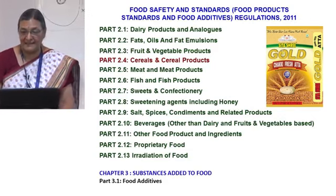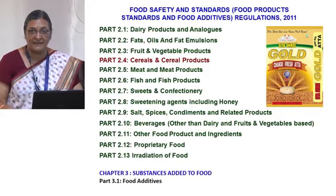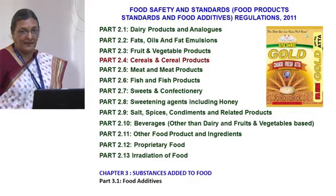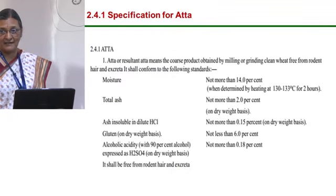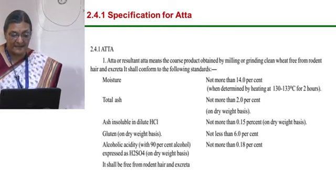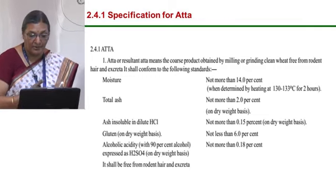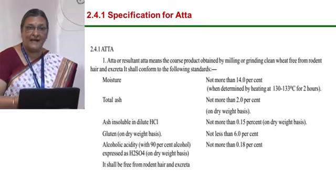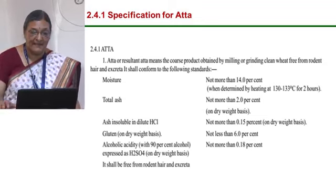FSSA has now published the required test methods for each commodity category, from 2.1 to 2.13 — 13 categories in all. For ATA, you need to perform: general parameters including musty odour and acidity; tests for antioxidants, preservatives, natural colours, and synthetic colours; quality parameters — moisture, total ash, ash insoluble, gluten, alcoholic acidity; metal contaminants; naturally occurring toxic substances (DON should be included); and pesticide residues. There are no microbiology standards for ATA, but for packaged or frozen vegetables, microbiology standards apply.